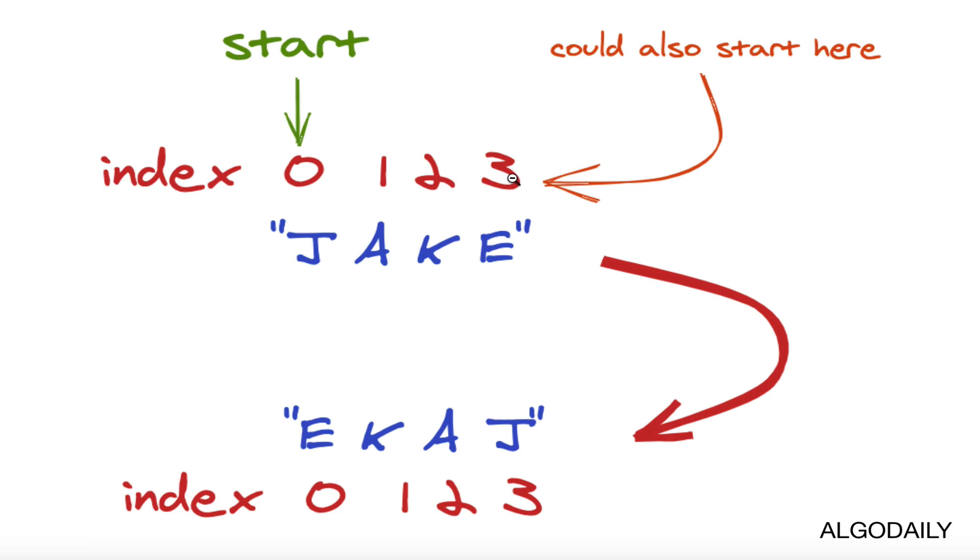In most languages, you can directly iterate through the characters of a string starting from the back. If we were to start our pointer at the last element of the array or string, and at each element push it to a new array or concatenate it to a new string, we can start here and produce a string that ends up being E, K, A, J, which is what we want.